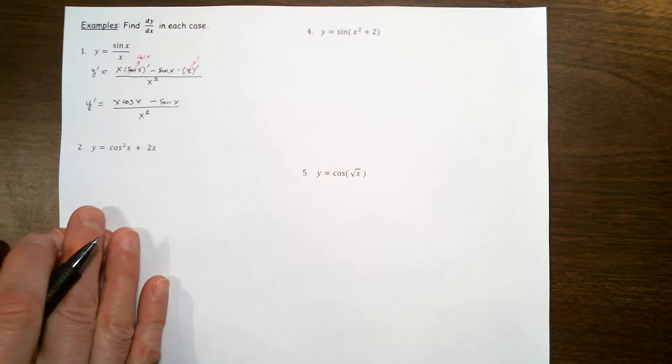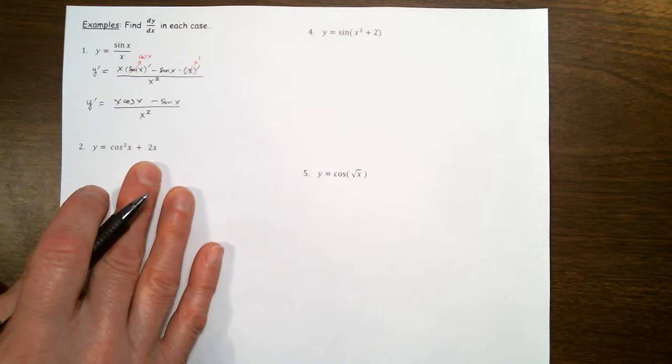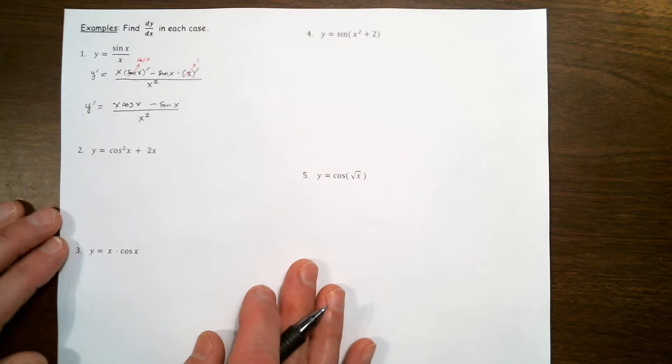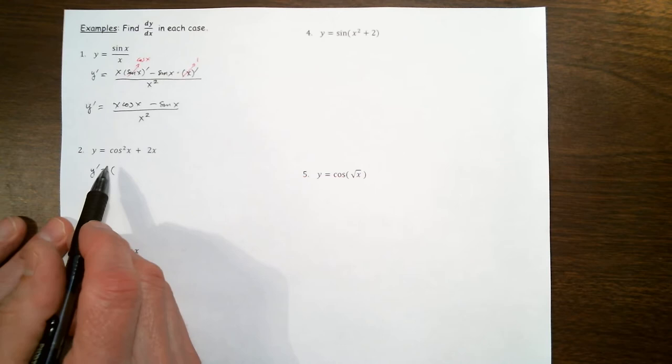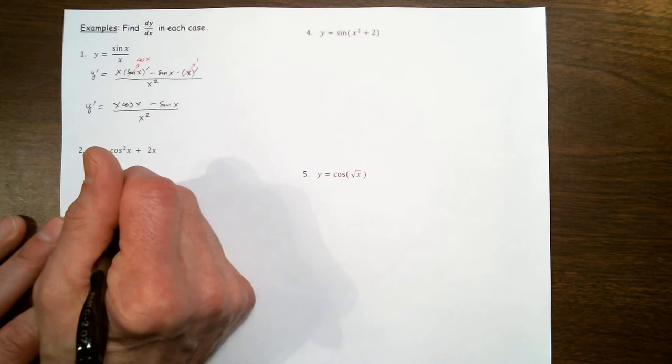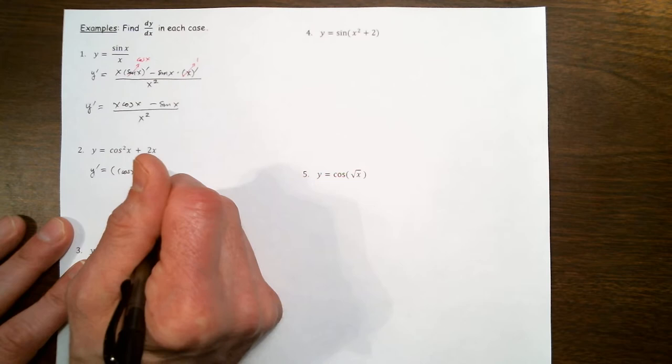Our second problem involves a sum of cosine squared of x with 2x. To differentiate the sum, we take the sum of the derivatives. So y prime is the derivative of the first function. The notation cosine squared of x means cosine of x times cosine of x — in other words, we could write it as cosine of x, quantity squared. So we differentiate cosine of x squared and add the derivative of 2x.